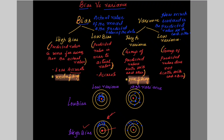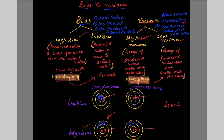Variance is defined as how much the predicted values are scattered with each other. We can experience high variance or low variance. High variance means the group of predicted values are scattered with each other — in machine learning terms, we call it overfitting. Low variance means the group of predicted values does not scatter with each other. The desired parameters for the model are low bias and low variance.